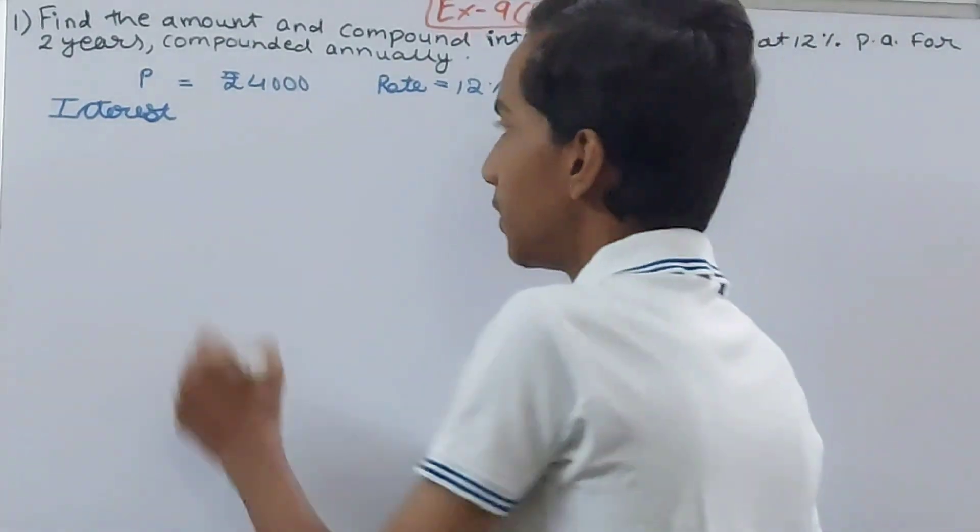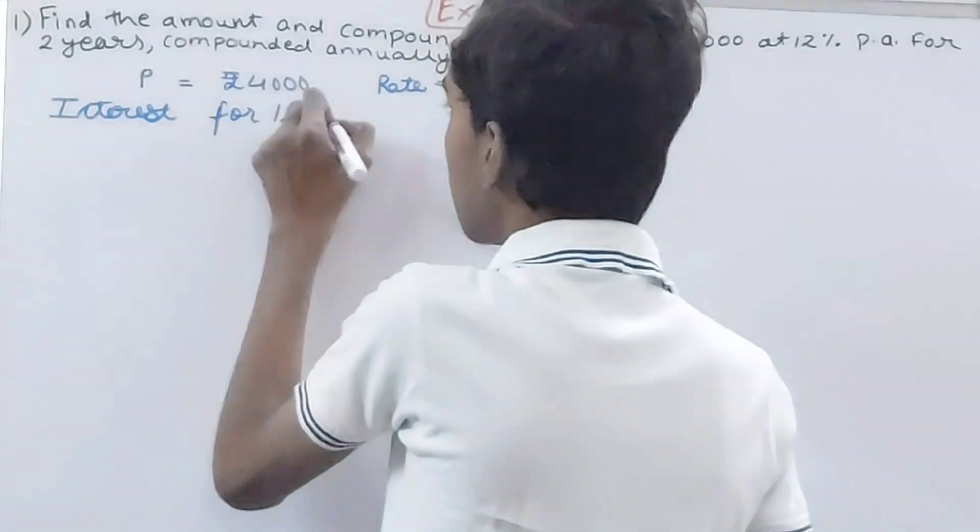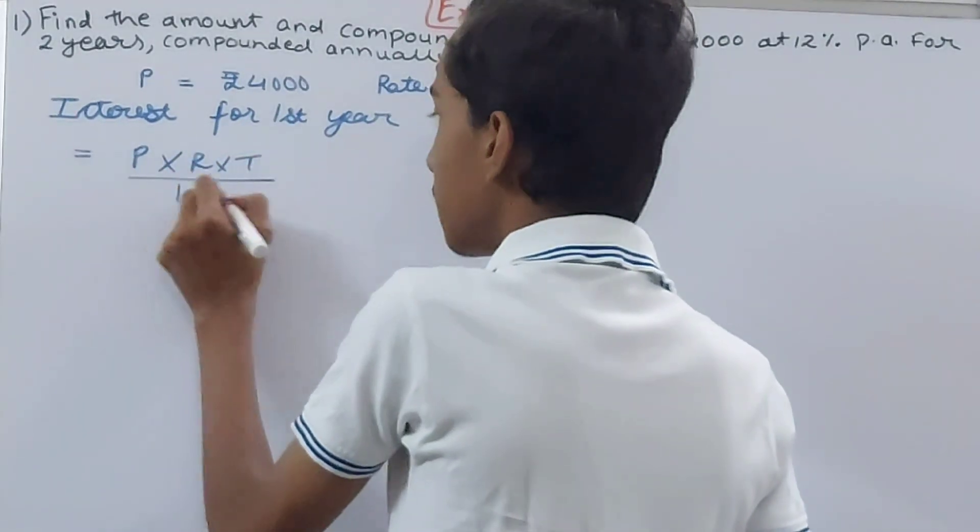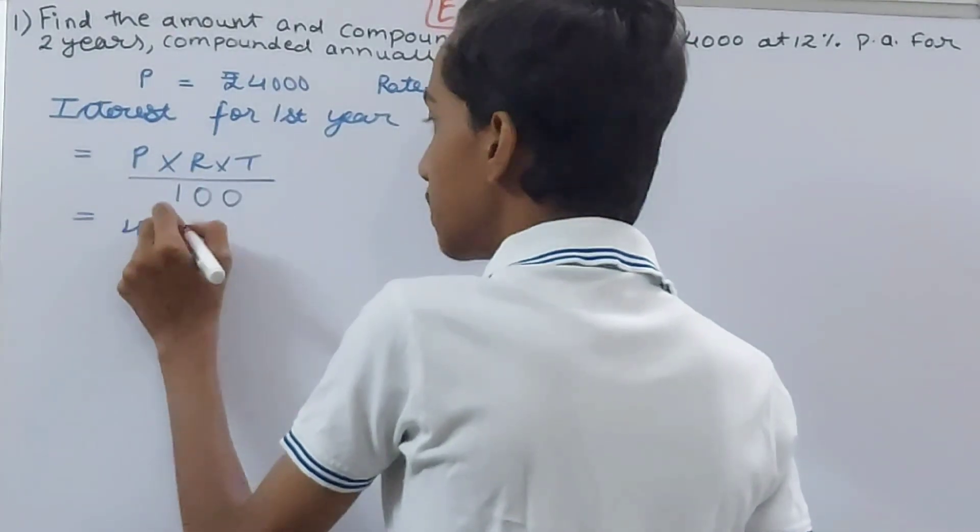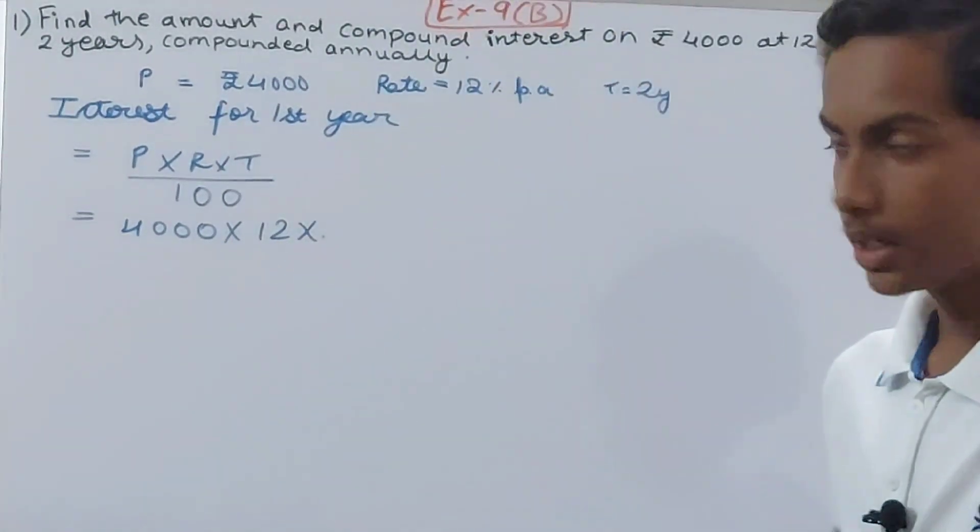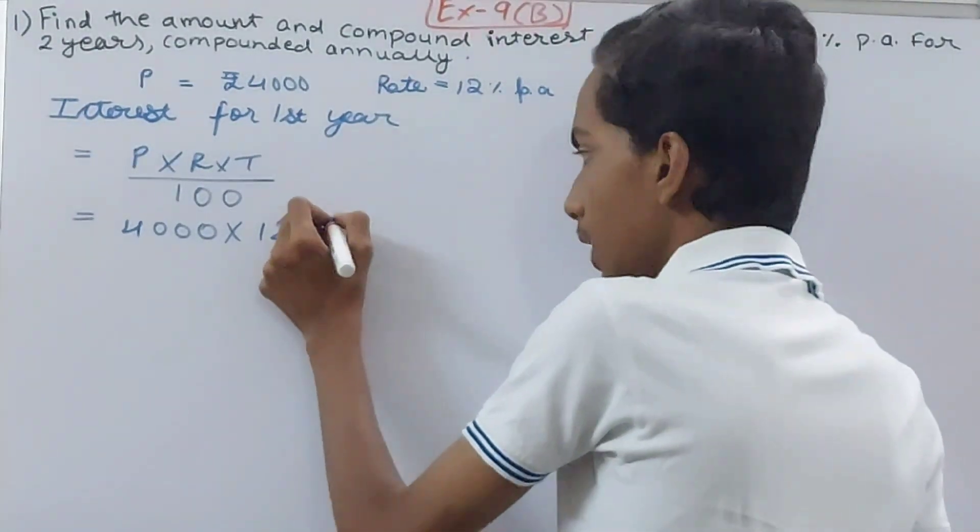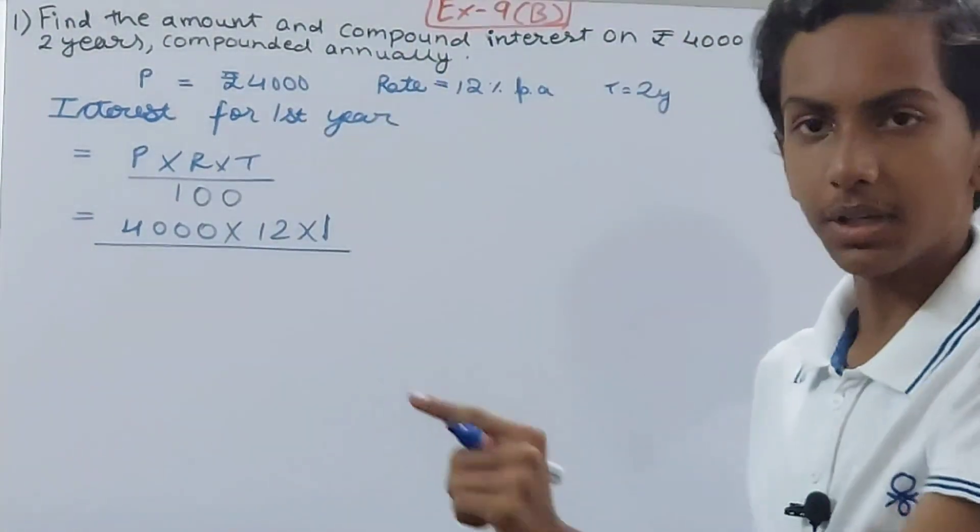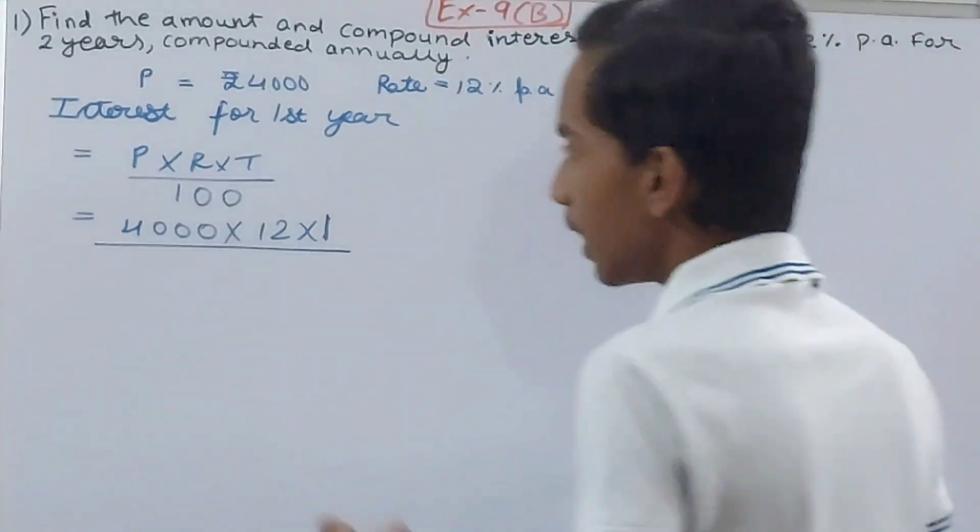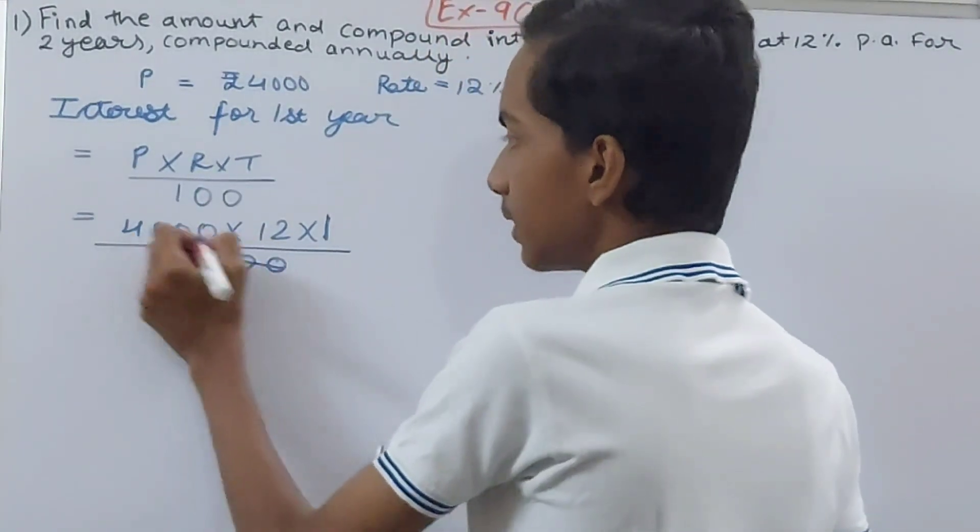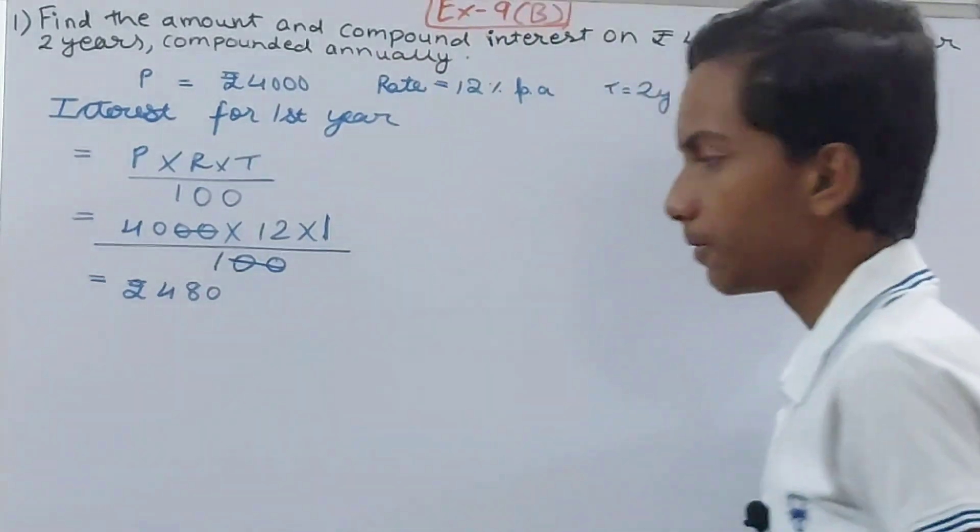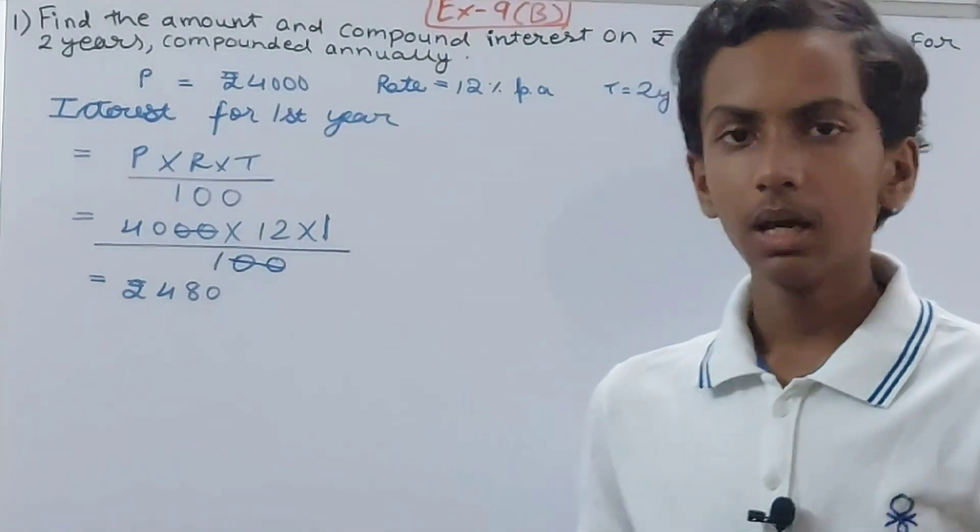The interest for the first year is equal to what? Here we will use the same formula: P × R × T / 100. So this is going to give you P is 4000, R is 12%, into time is one. Here we need to keep this in mind—the time will be one year every single time because we will calculate the interest not for two years but for one year every time. The time will always be one. Upon 100, cancel it, cancel it—so you have rupees 480. This is the interest for the first year, rupees 480.